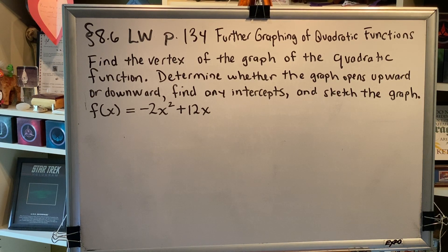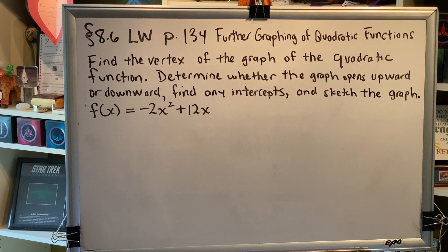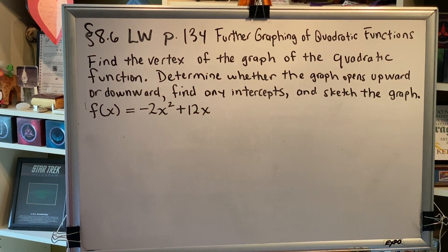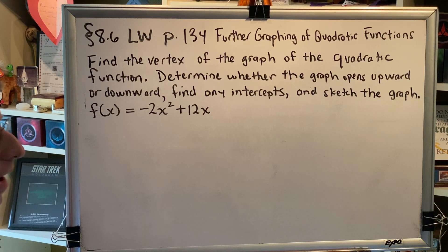Please open in your learning workbook to page 134 as we solve a problem involving graphing a quadratic function when the equation is given in standard form instead of vertex form. Find the vertex of the graph of the quadratic function. Determine whether the graph opens upward or downward. Find any intercepts and sketch the graph. The equation we're provided is f(x) = -2x² + 12x.